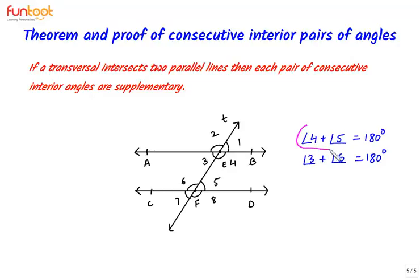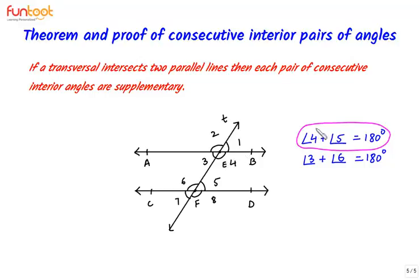First, let's prove angle 4 plus angle 5 equals 180 degrees. We need to pick a linear pair which involves at least one of these angles. We can take the linear pair of angle 1 and angle 4, since it includes angle 4. So we write: angle 1 plus angle 4 equals 180 degrees — call this equation 1.